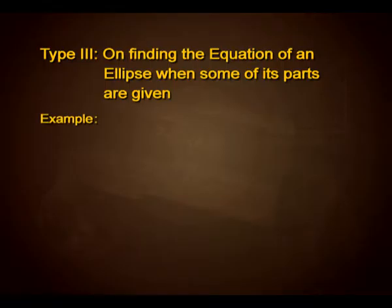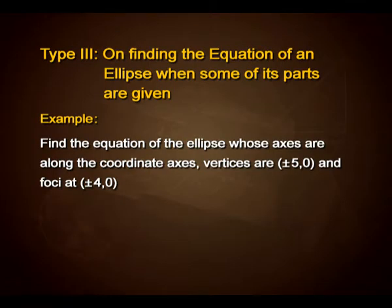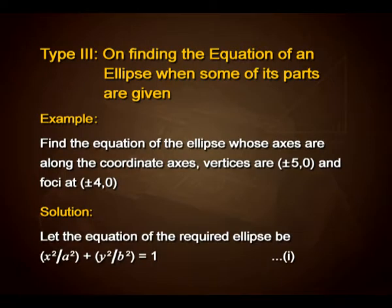Here is an example for us. Find the equation of the ellipse whose axes are along the coordinate axes, vertices are plus or minus 5 comma 0 and foci at plus or minus 4 comma 0. Let the equation of the required ellipse be x² upon a² plus y² upon b² equals 1. Take this as equation number 1.